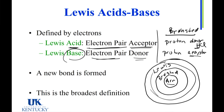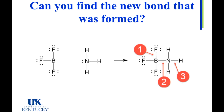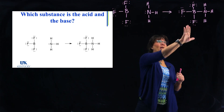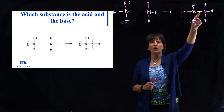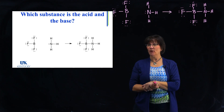Now we're ready to look at an example. The example on the screen is a reaction between BF3 and NH3. I am showing you the products — I'm not going to expect you to predict the products. As we look at those products, in the Lewis acid-base definition there's always a new bond that's formed. Which one is where the new bond is formed — is it 1, 2, or 3? Well, the new bond is between the boron and the nitrogen, so it is at 2. Now let's go to the light board and look at the same reaction. We have to be able to determine who is the acid and who is the base.